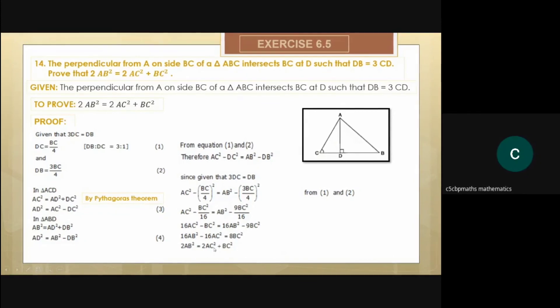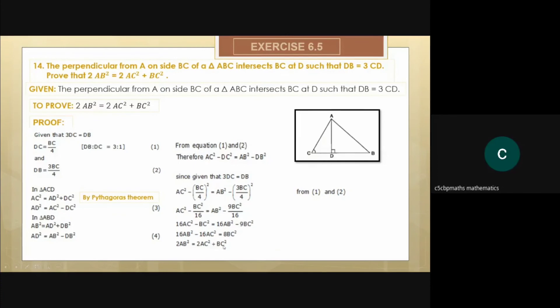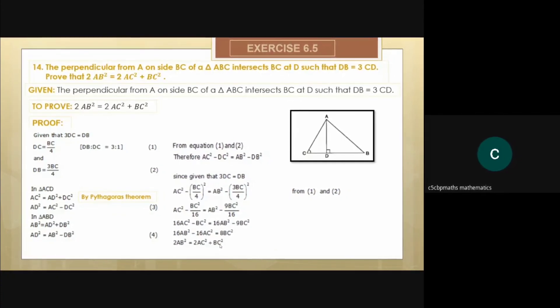That 2AB² is equal to 2AC² + BC². So hence it will be very easily proved. You can just watch the video again in case you have a doubt. Thank you so much.